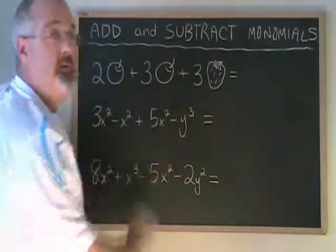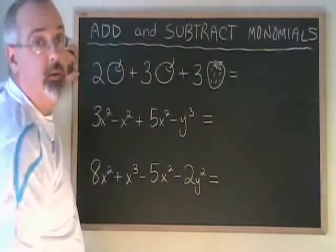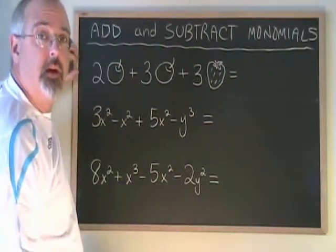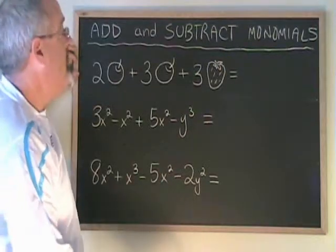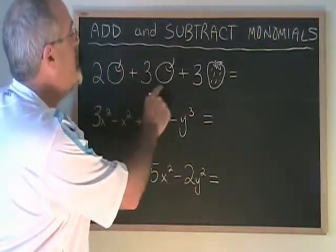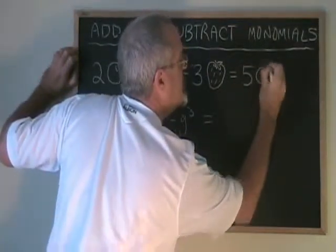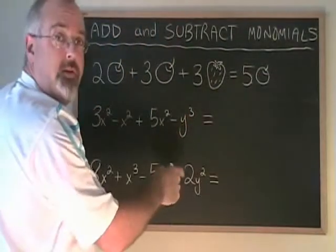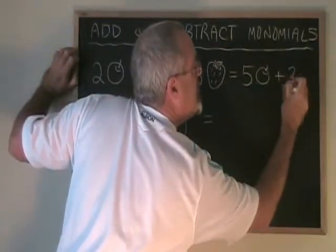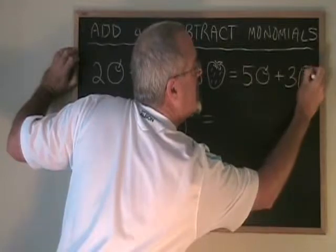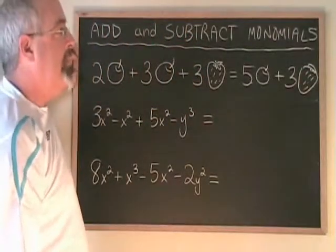We could say we have two plus three plus three equals eight pieces of fruit, but what if we want to keep it clear how many apples we have and how many strawberries we have? We will say two apples plus three apples equals five apples, and the three strawberries remain expressed as three strawberries.